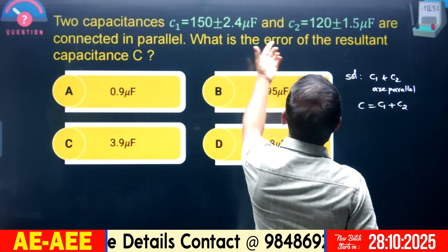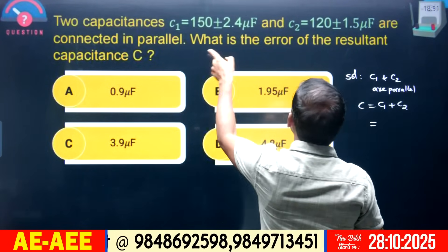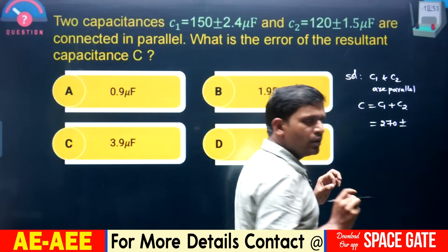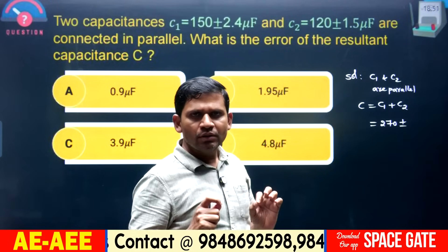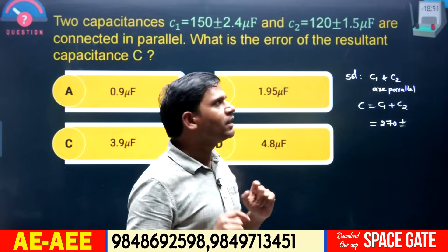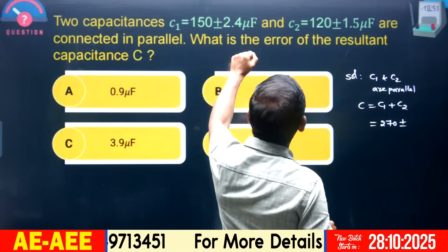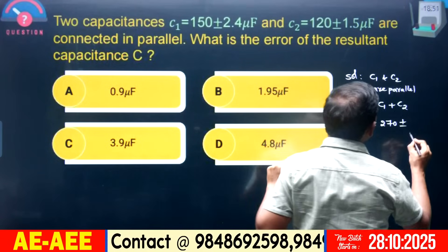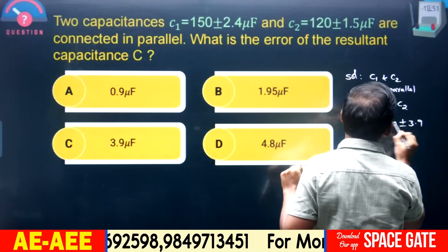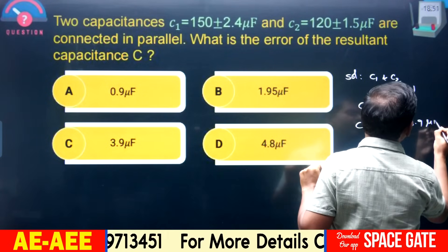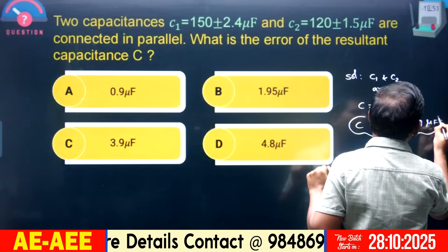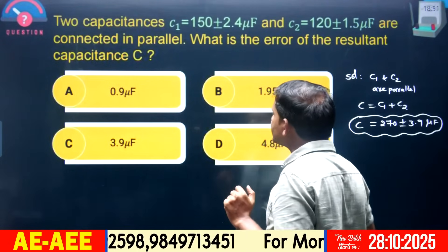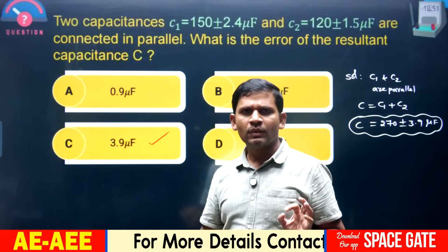C1 = 150 µF and C2 = 120 µF. In parallel: C = 150 + 120 = 270 µF. For errors: since this is addition and the given errors are absolute, absolute errors are added directly. The absolute error of C1 is 2.4 and of C2 is 1.5. So total error = 2.4 + 1.5 = 3.9. The resultant is 270 ± 3.9 microfarad, and the error equals 3.9 microfarad. Option C is the right answer.